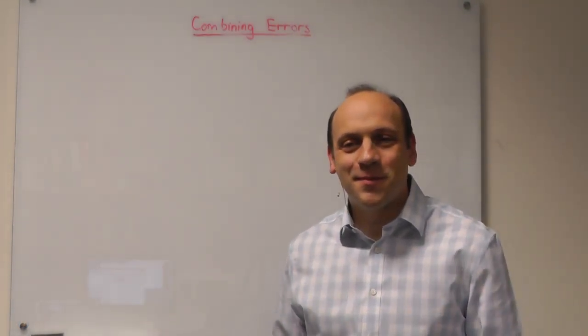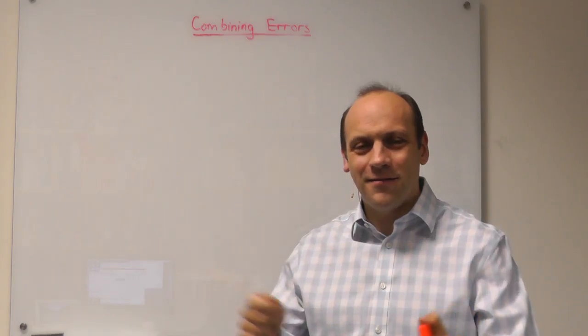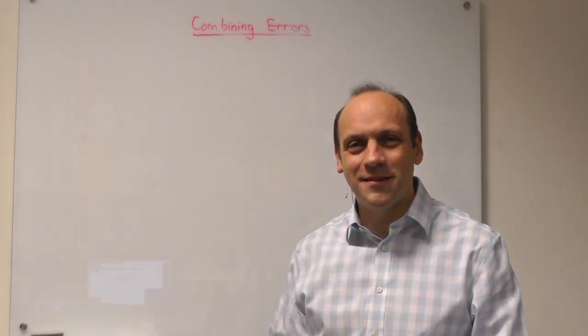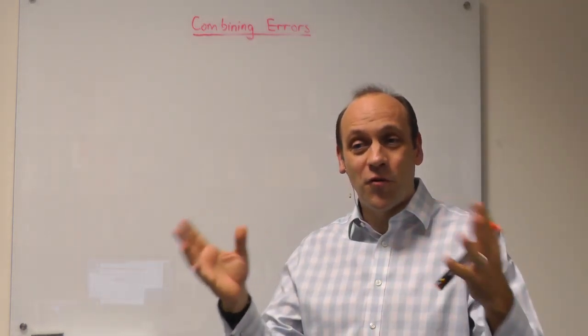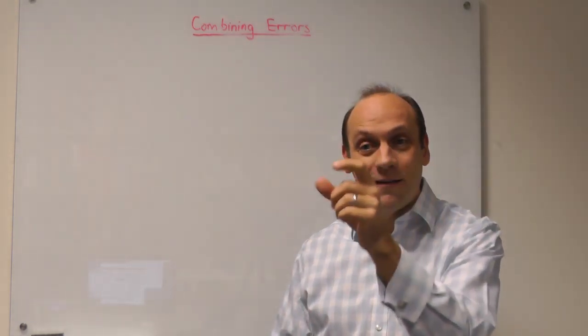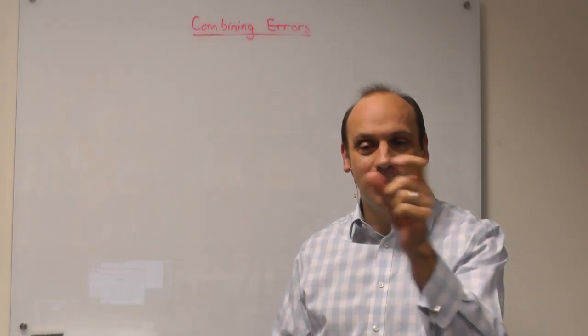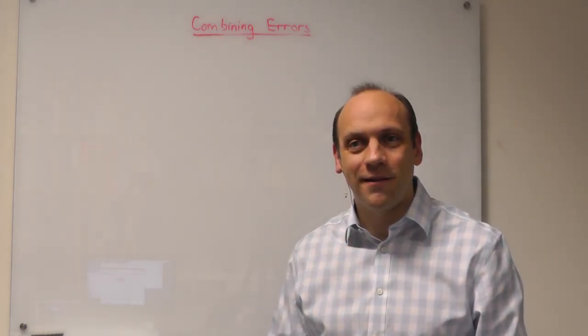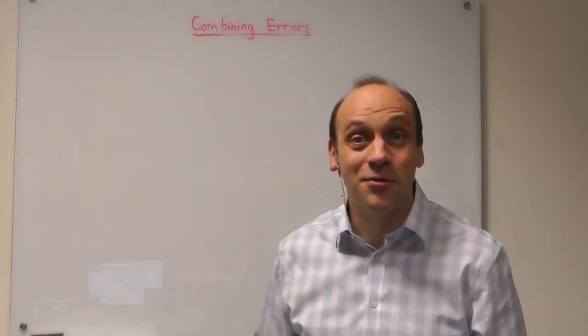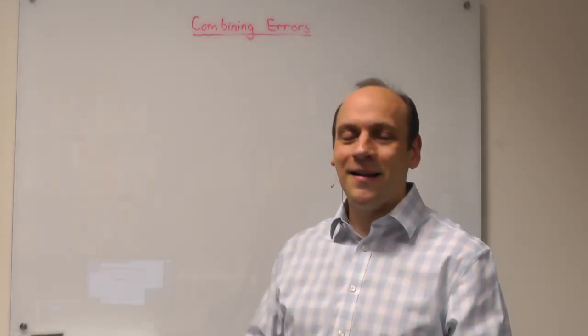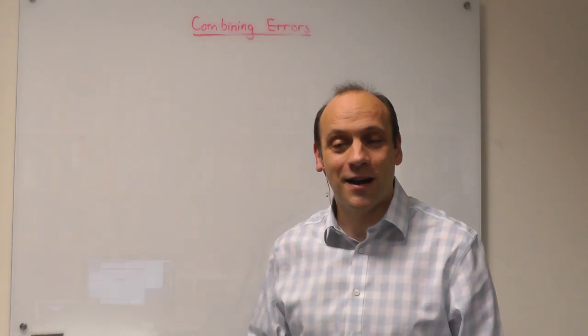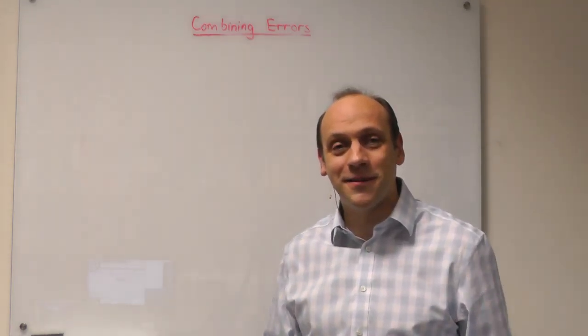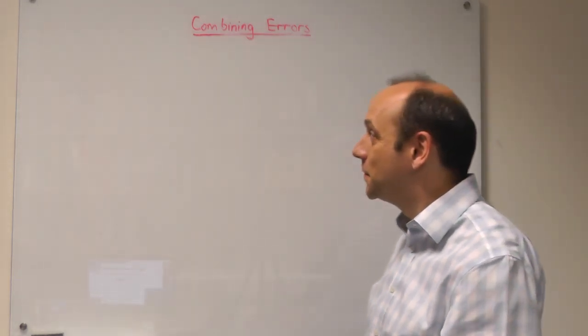Hi there. In this last piece on combining errors, we're thinking about how we combine errors and uncertainties together. If we have a formula with some variables in it and we know the uncertainty in the variables, what's the uncertainty in the answer to the formula? That'll get you going for the lab until we come back to it again later in the lecture course.